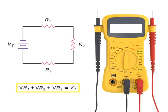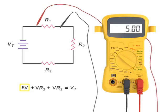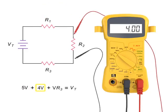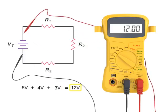By adding the voltage drop across resistors 1, 2, and 3, you can determine the total voltage applied at the source. In this case, the total voltage is 5 volts plus 4 volts plus 3 volts, or 12 volts total voltage.